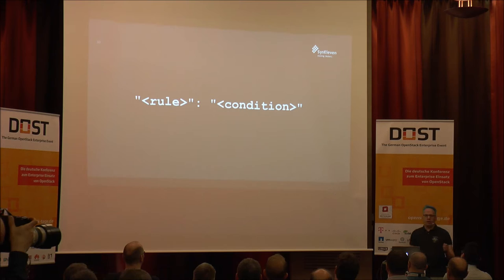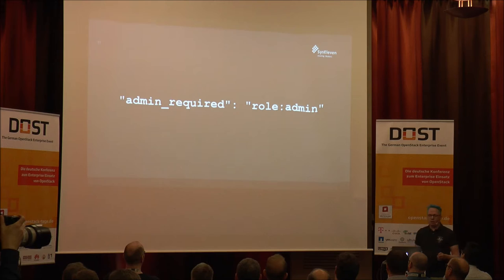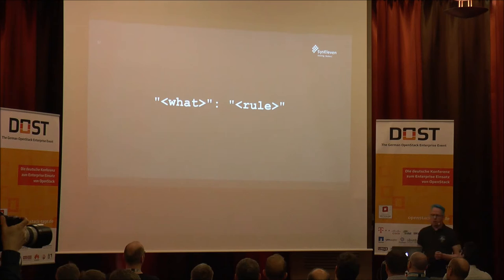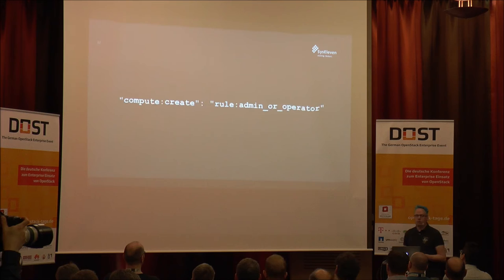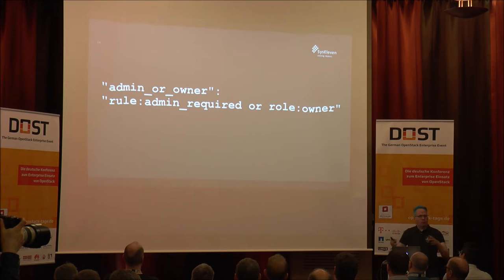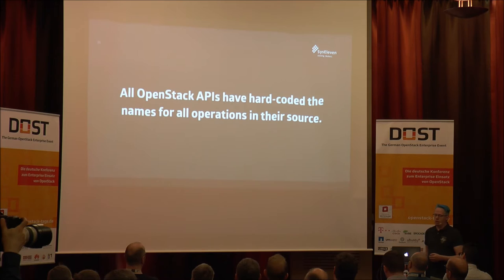You can also create aliases, so if you have a right-hand side that you repeat often, you can give it another name. For example, there is a rule called admin_required, and if the rule is called admin_required, you actually have to have the role admin as Keystone tells you. You want to do something and for that a rule is applied — for example, if you want to create compute resources, you have to satisfy the rule admin or operator. The rule admin_or_operator is a combination: you need to satisfy either admin_required or have the role owner. So you can build complex combinations and it is very nice for all the operations you can control with this.